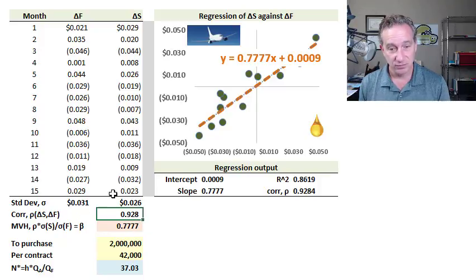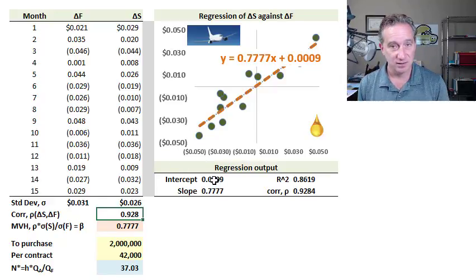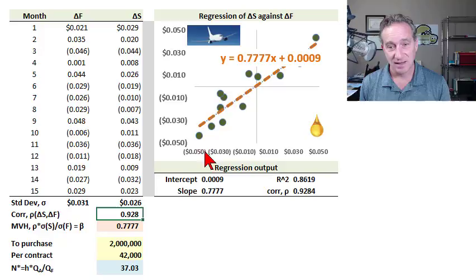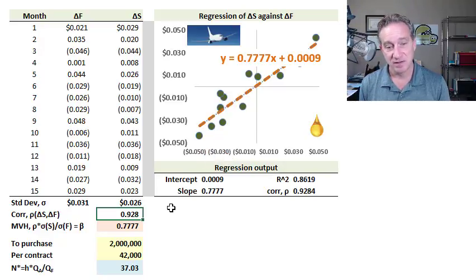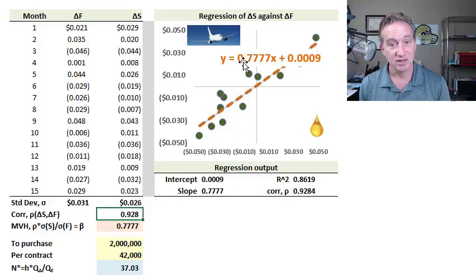Those three pieces of information are enough to calculate the minimum variance hedge. I've plotted the regression to highlight the simple fact that the minimum variance hedge ratio is the same as the slope in the regression — it's the same as the beta in the regression.